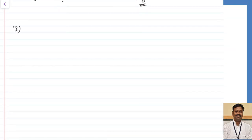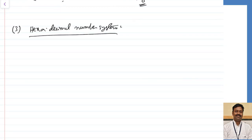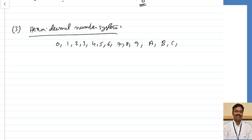The last number system we are going to discuss is the hexadecimal number system. It has 16 symbols: 0 through 9, then A=10, B=11, C=12, D=13, E=14, and F=15. So the symbols vary from 0 to 15.